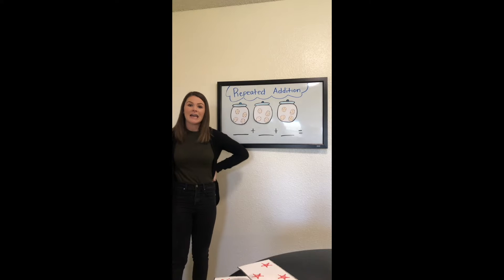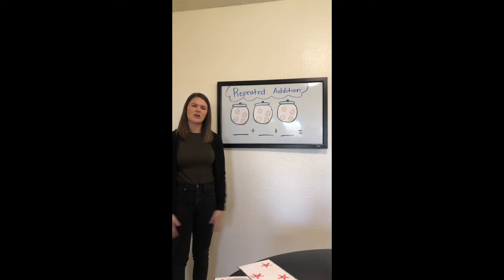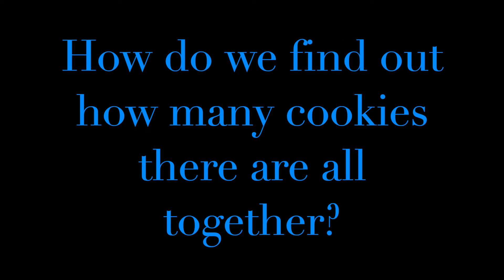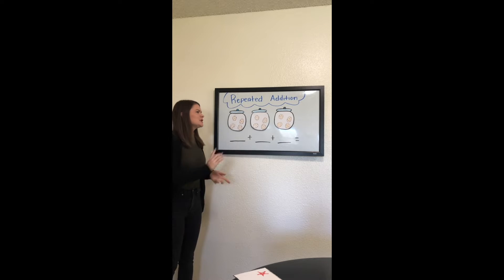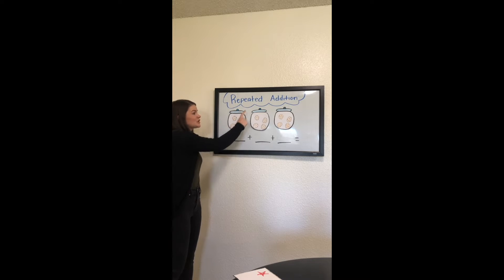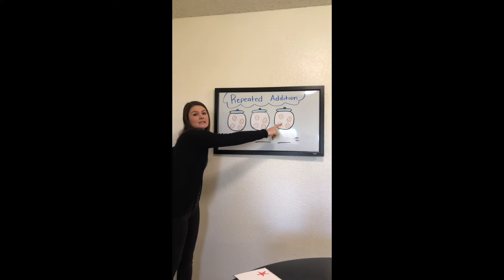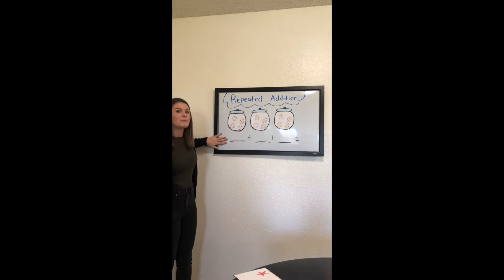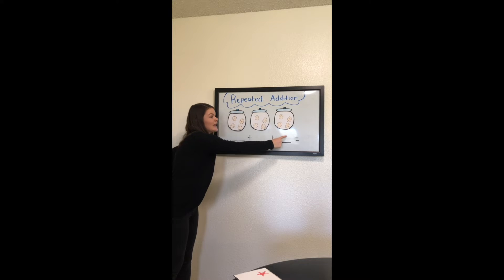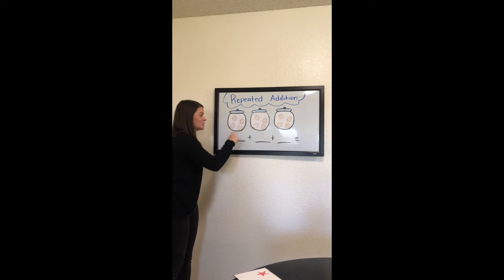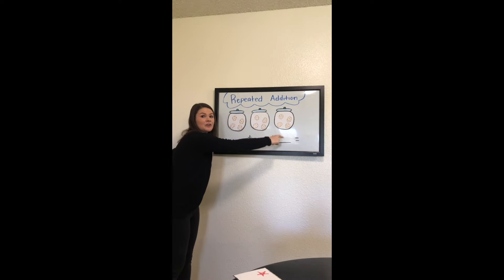So now we can start adding. How can we find out how many cookies there are altogether? If you said we add, you're correct. Now, we want to make sure we add each jar of cookies — each group. So let's look at our number sentence. You take one group's amount, put it here, and you add it to the next group and add it again to the next group. That's why it's called repeated addition — you add one group plus another group plus another group, and each group's the same.